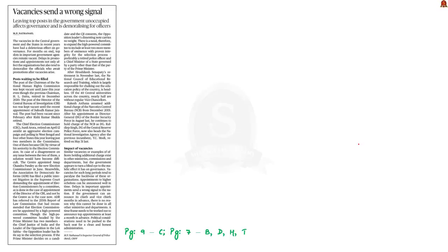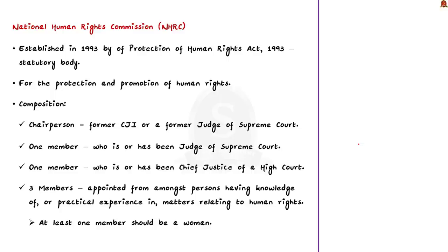Now let us take up this news article: 'Vacancies Send a Wrong Signal.' This open editorial article focuses on how vacancies in top posts of government are affecting governance. These vacancies arise due to delays in promotion and appointments. To explain it, the author takes the example of the National Human Rights Commission and the Election Commission of India. The National Human Rights Commission is headed by a chairman and this post was kept vacant for a period of six months, ranging from January 2021 to June 2021.